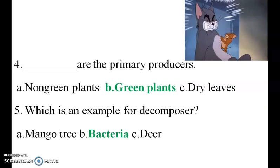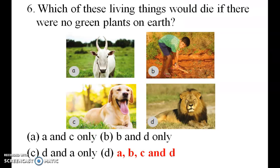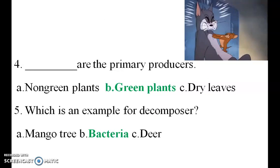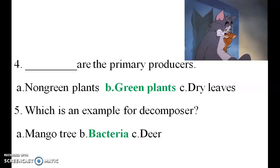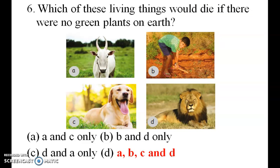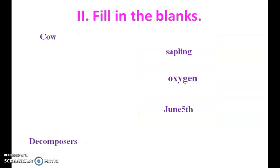Green plants are the primary producers. Which is an example for decomposer? The answer is bacteria. Which of these living things would die if there were no green plants on earth? The options are cow, dog, and lion.